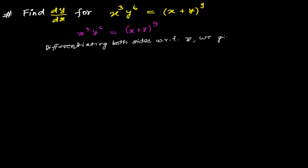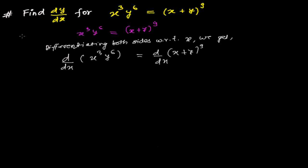Let's write our equation. Our equation is x cubed y⁶ equals x plus y to the power 9. Now let's differentiate both sides with respect to x. We will get d/dx of x cubed y⁶ equals d/dx of x plus y to the power 9. Now we need to differentiate it. Here x cubed times y⁶ — x cubed is one function and y⁶ is another function. When one function multiplies another function, we have to use the product rule.